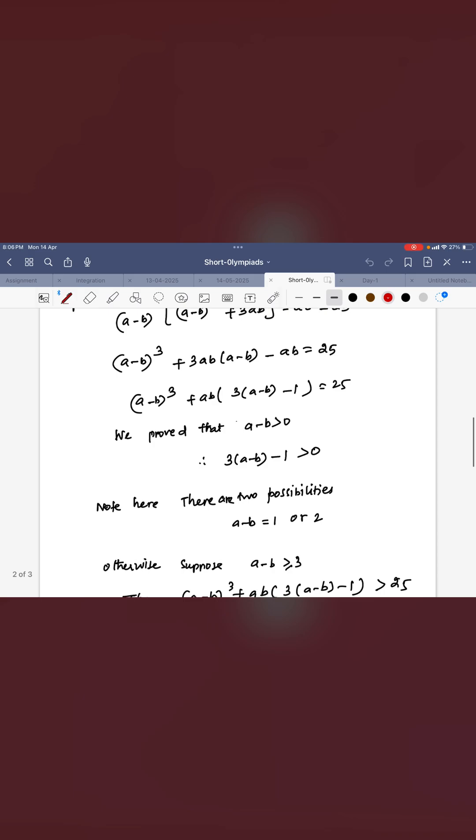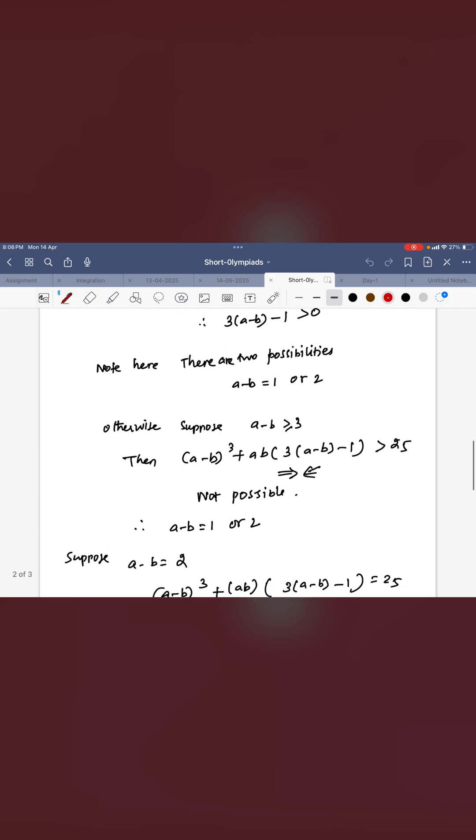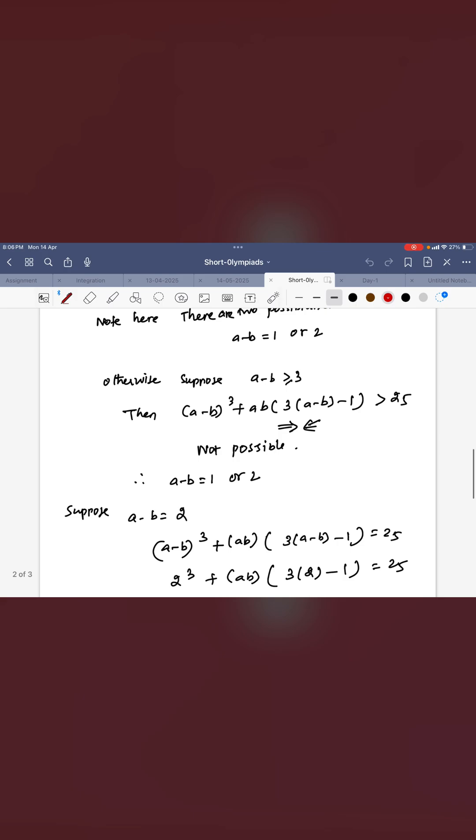A - B equals 1 or 2. Suppose if I take more than, suppose equal to 3, then what will we get? The whole expression on the left side will be more than 25. We need actually equal to 25. This is not possible.